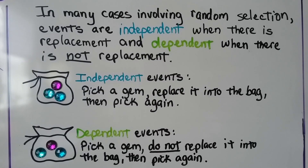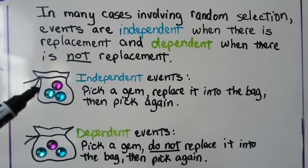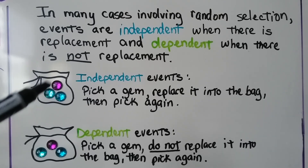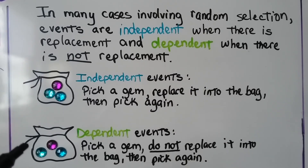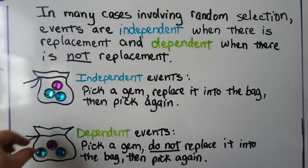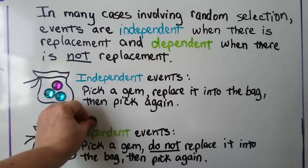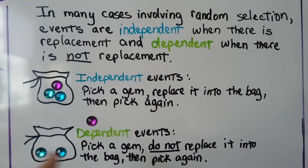In many cases involving random selection, events are independent when there is replacement and dependent when there is not replacement. For example, picking gems from a bag: independent events would be picking a gem, replacing it into the bag, and then picking again — our chance of picking the same gem is the same. Dependent events would be picking a gem, not replacing it, and picking again. If we pick the purple gem and don't put it back, we now have a 100% chance of picking a blue one because that's all that's left.